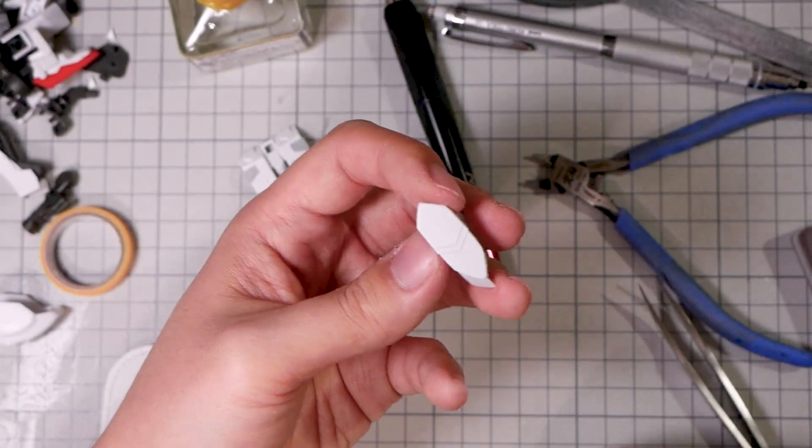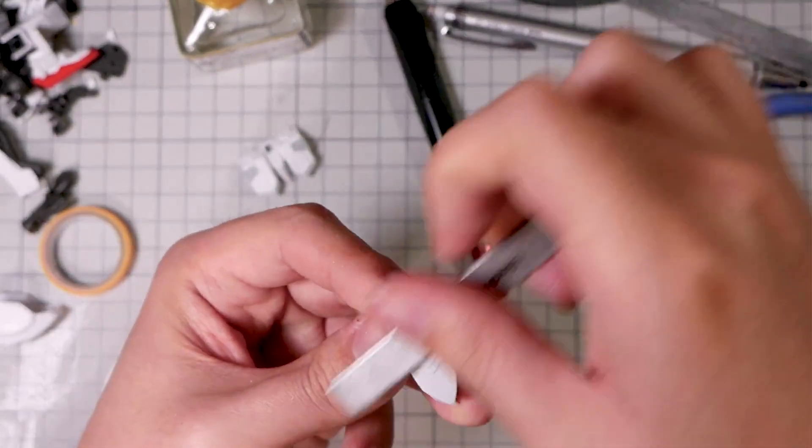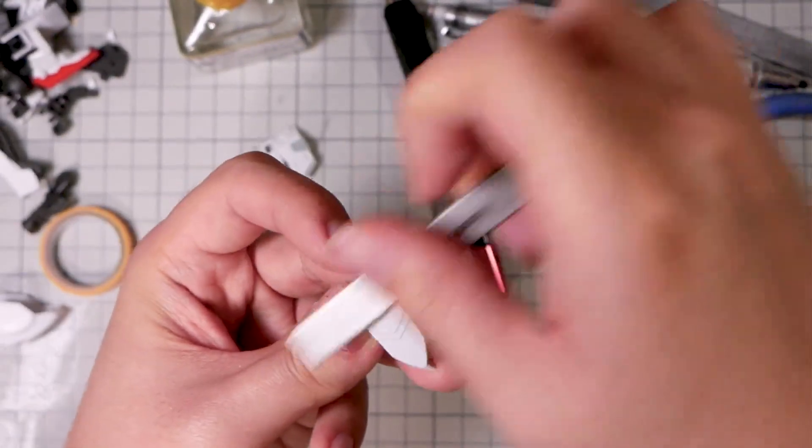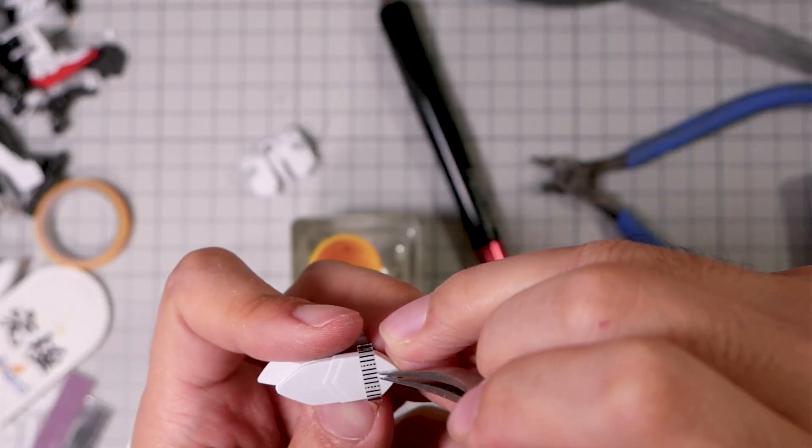There are a bit of details on the side of the thighs, making the mold line removal difficult to deal with, so I'm just going to sand everything off and remake the detail with PLA plate.